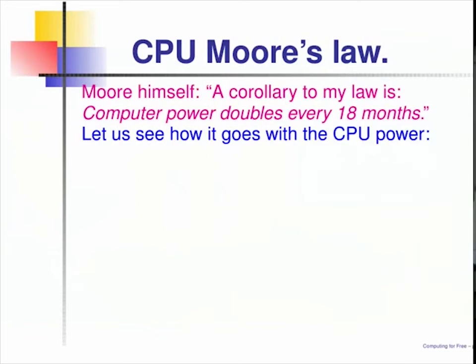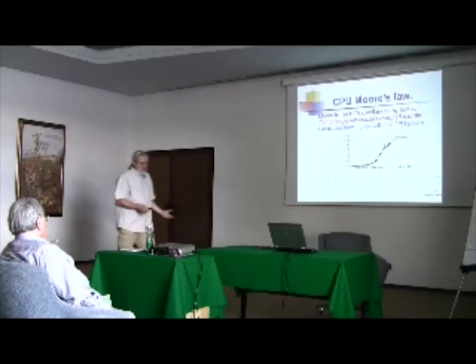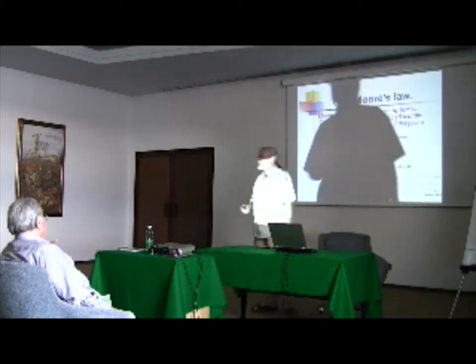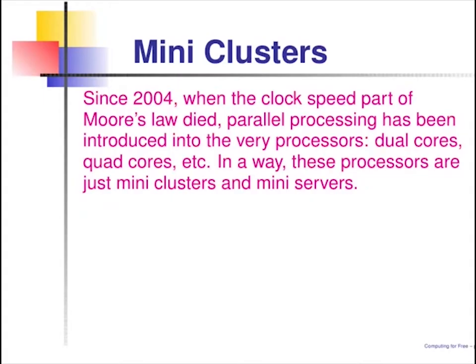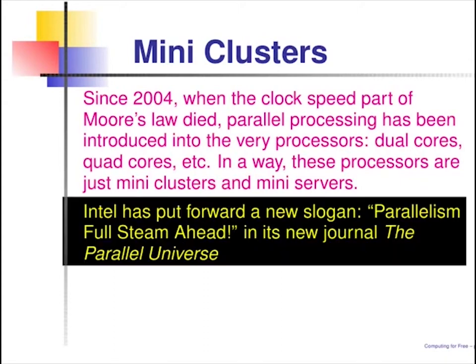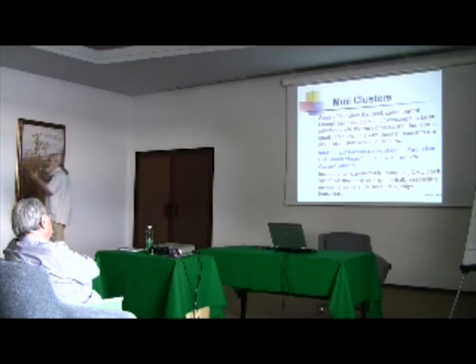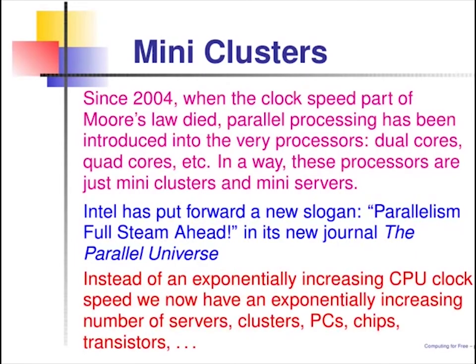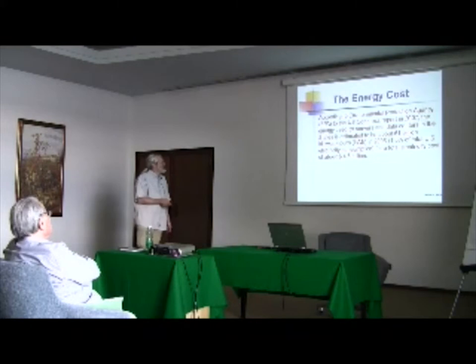And now clock speed has been constant for already four years — not due to Intel but to IBM. What's proposed instead of this exponential law is the following: clusters all around, not only in big data centers with all that heating, but also in our laptops and desktops. Recently this slogan appeared in the Intel journal. What we are now left with is to increase exponentially the number of our PCs instead of increasing the speed of the processors.